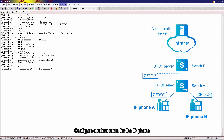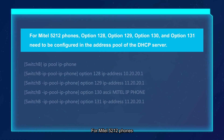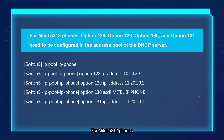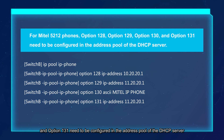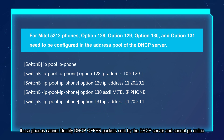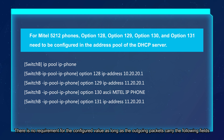Configure a return route for the IP phone. For Mattel 5212 phones, option 128, option 129, option 130, and option 131 need to be configured on the address pool of the DHCP server. Otherwise, these phones cannot identify DHCP offer packets sent by the DHCP server and cannot go online. There is no requirement for the configured value as long as the outgoing packets carry those fields.